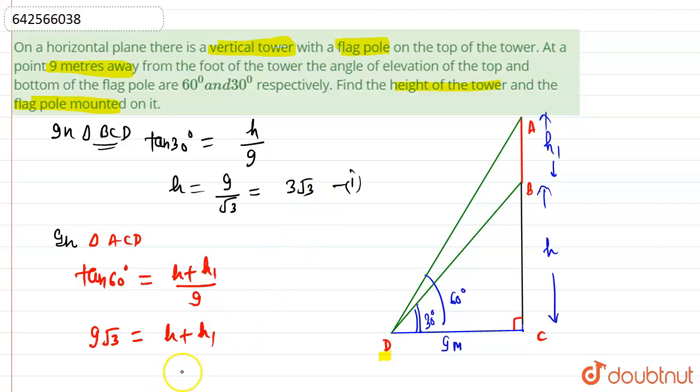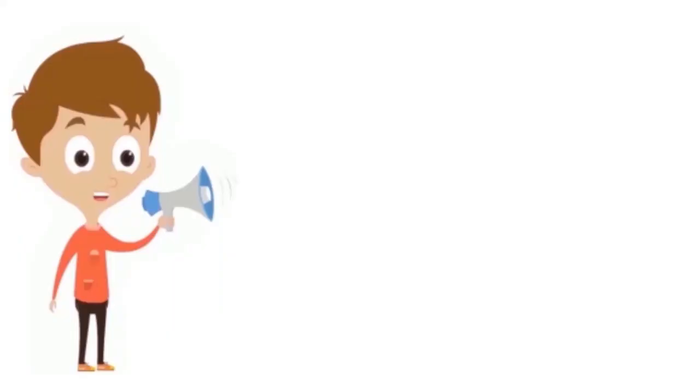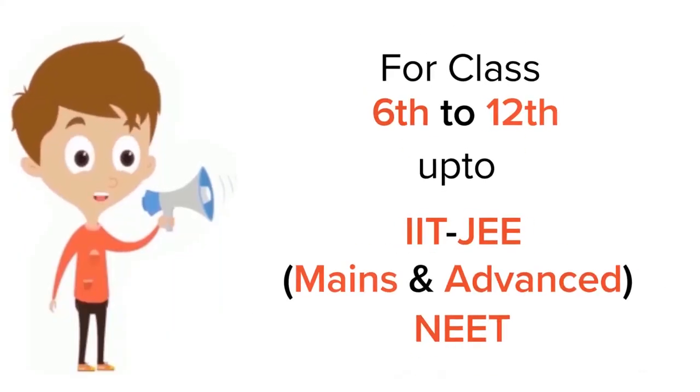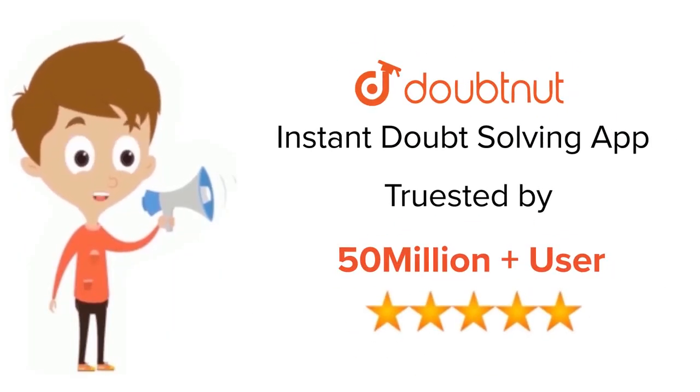So putting the value of H, we can have H1 is equal to 9 root 3 minus 3 root 3, which is equal to 6 root 3 meters. This is our required answer. So height of this tower is basically 3 root 3 meters and the height of flagpole is 6 root 3 meters. Thank you. For class 6 to 12, IIT JEE, and NEET level, trusted by more than 5 crore students.